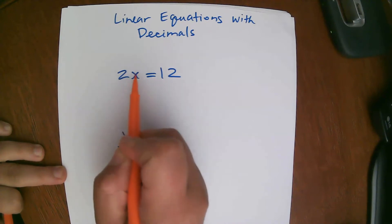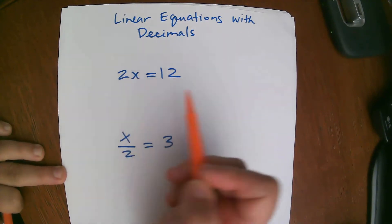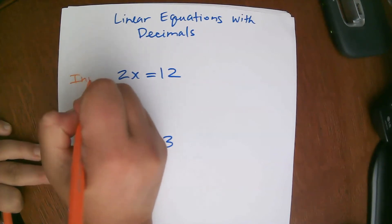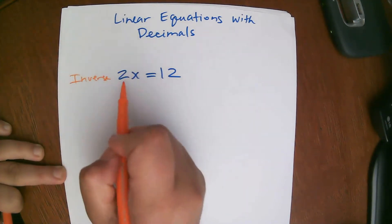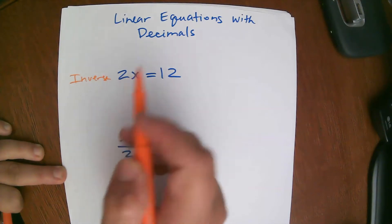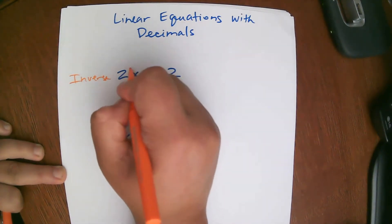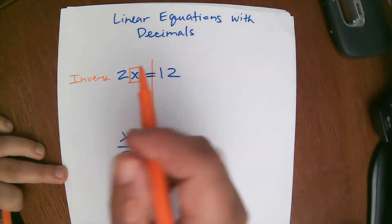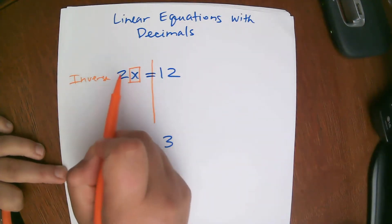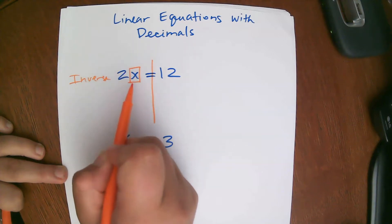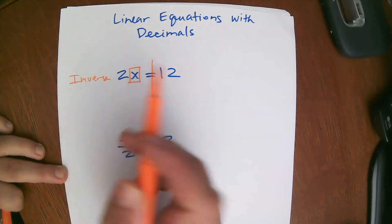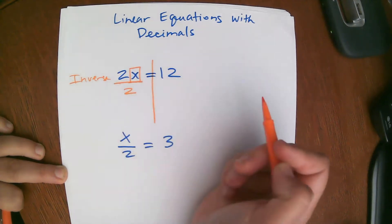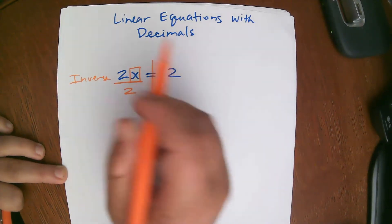So here this says 2 times x equals 12. If you recall, we take the inverse of the number next to x. My first step is to box the variable and draw my wall. You might remember that from LS942a. We're going to take the inverse of 2 times x. The inverse of 2 times x is divide by 2, right? Inverse of times is divide.